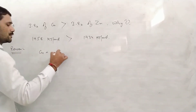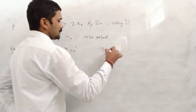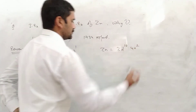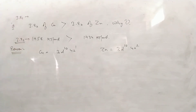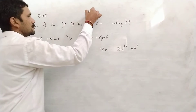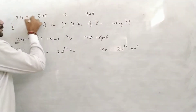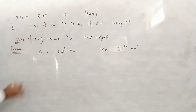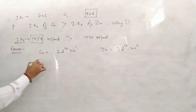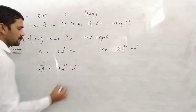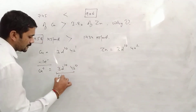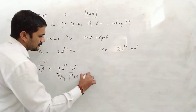To explain the reason, we write the configuration. Copper's configuration is 3d10 4s1. Zinc's configuration is 3d10 4s2. If we compare the first ionization energy of copper and zinc, copper's first IE is 745 kJ/mol but zinc's is 906 kJ/mol. This means zinc's first ionization energy is higher than copper's. However, for the second ionization energy, copper's is higher. When we remove one electron from copper, the configuration becomes 3d10 4s0, which is a fully filled, stable state.